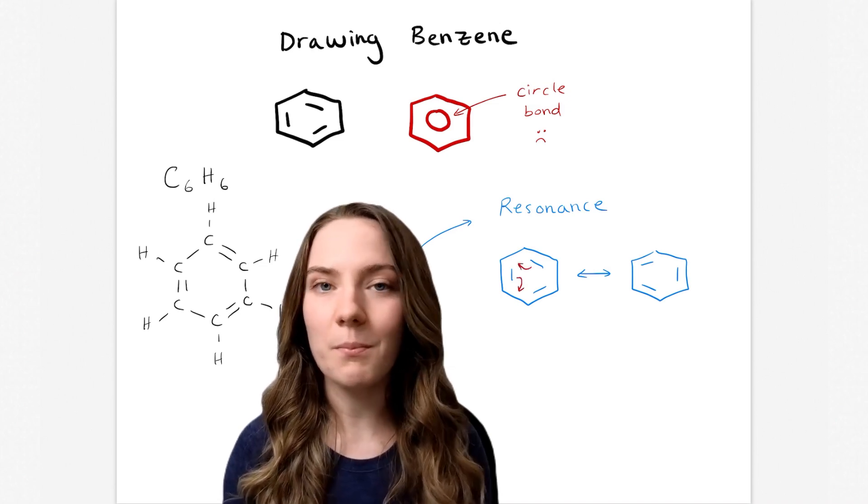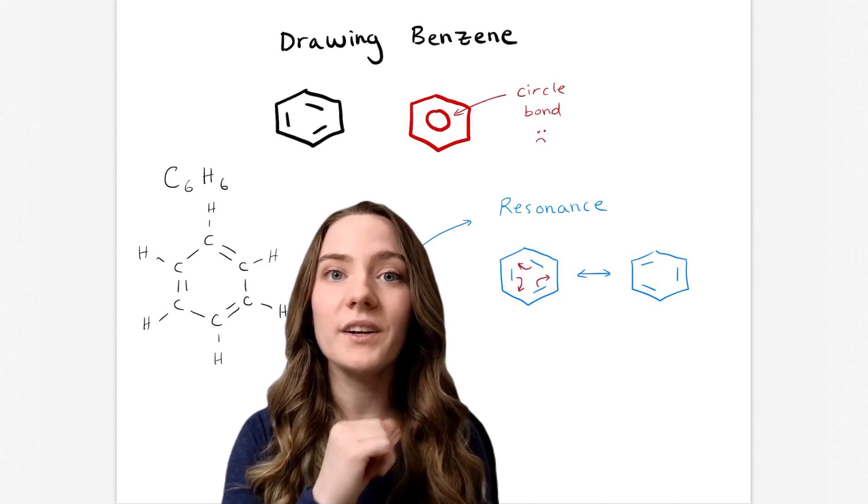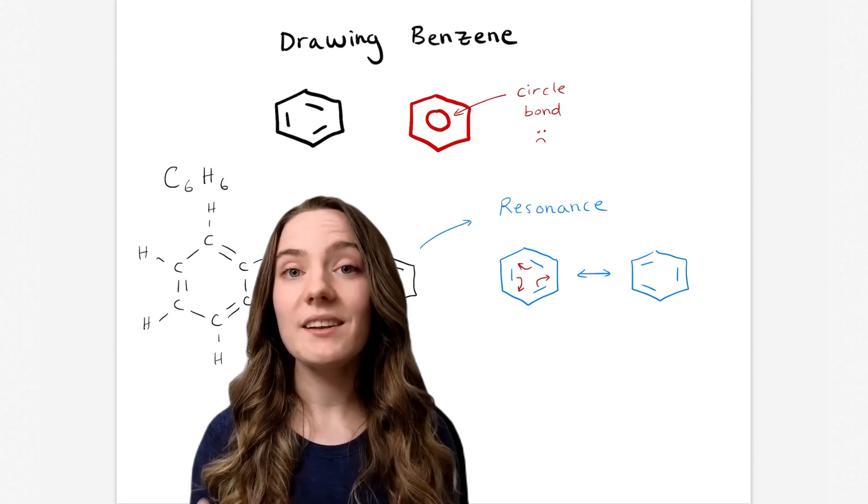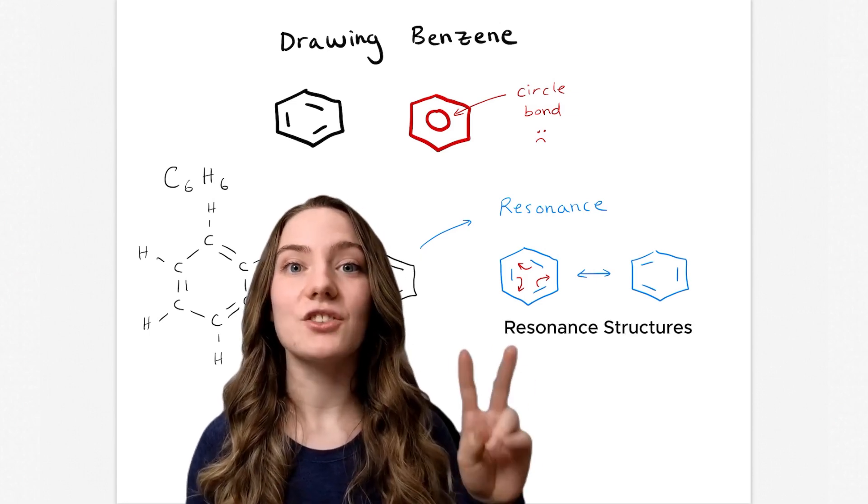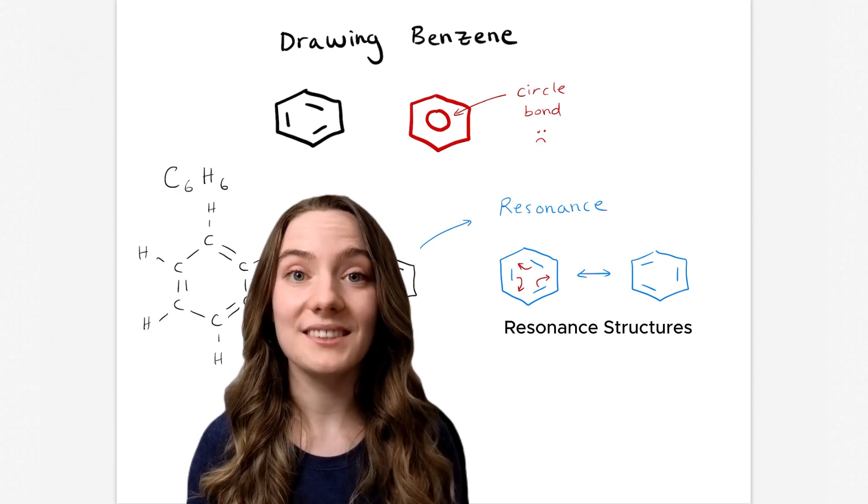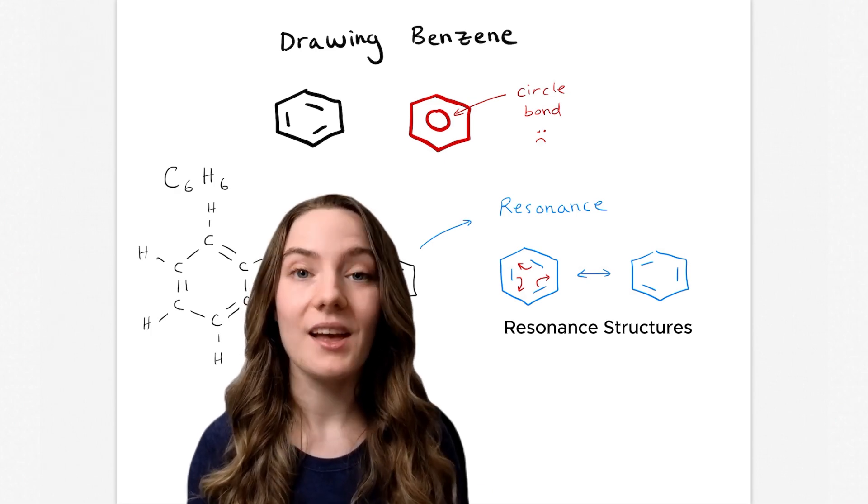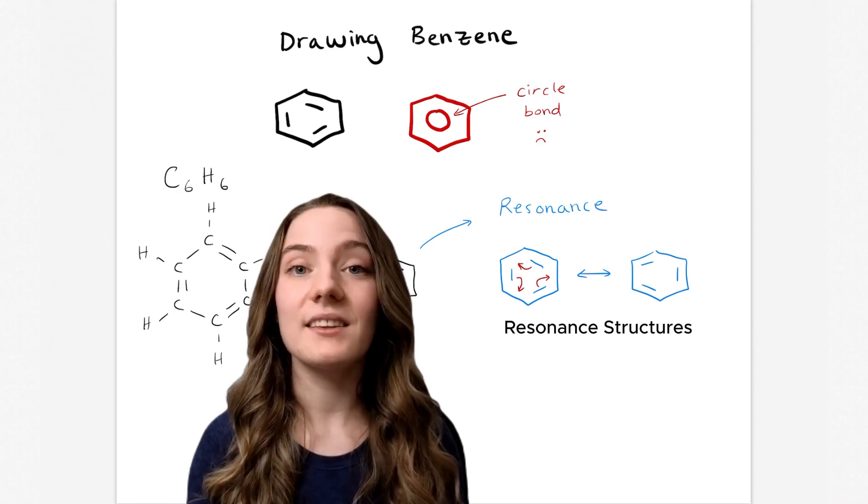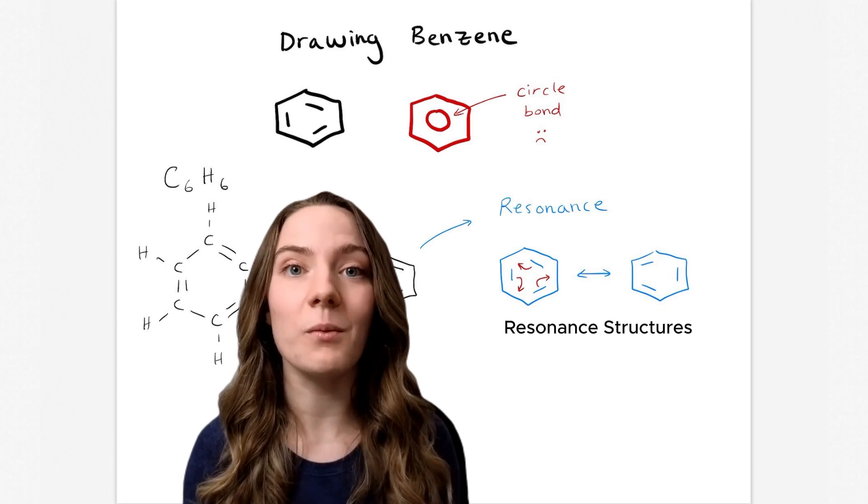Notice how the double bonds have shifted one carbon over. So we can see that benzene has two resonance structures. They both have the exact same chemical formula. The only difference is the position of these double bonds.